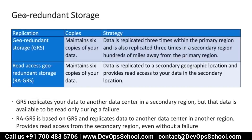Geo-redundance is not ideal if you don't want data lagging when you're moving from one storage to another as a result of failover. Geo-redundance may give you good durability, but there are chances of lagging. GRS replicates data to another data center in the secondary region, but data is available to read only after or during a failure. RAGRS gives you better read performance in comparison to GRS.